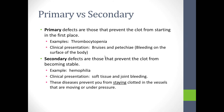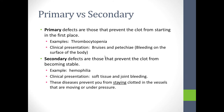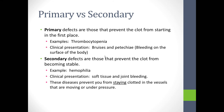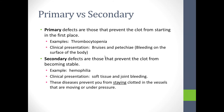A secondary defect is one that prevents the clot from becoming stable. An example of that is hemophilia. Another example is factor 13 deficiency, in which fibrin gets made but it never gets cross-linked, so it's never strong enough to be stable against destruction of the clot. In hemophilia, the thrombin burst is so slow that fibrin production is very slow, and the clot is soft, not structurally sound, and not waterproof in terms of preventing blood from leaking into the surrounding tissues. So a primary defect prevents you from starting a clot, and a secondary defect prevents you from staying clotted.